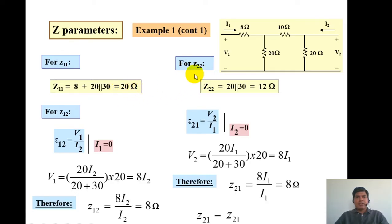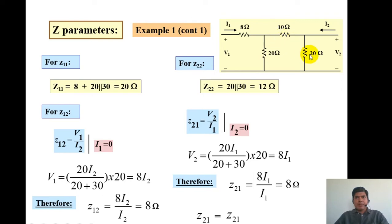For Z22 we keep port 1 open, meaning no current flows through port 1 and I1 equals 0. We find the equivalent impedance looking from port 2, which is 20 plus 10 in parallel with 20 ohms, giving 12 ohms. So Z11 is 20 ohms and Z22 is 12 ohms.